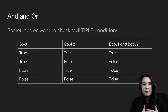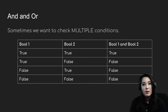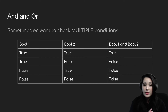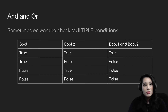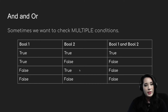So far we've been checking a single boolean to see whether it's true or false. However, we can check multiple booleans using the and and or operators. The and operator checks if two things are both true. If both boolean one and boolean two are true, the result is true. If one is true and the other is false, and evaluates to false. If boolean one is false and boolean two is true, it's false. And if both are false, it's also false.